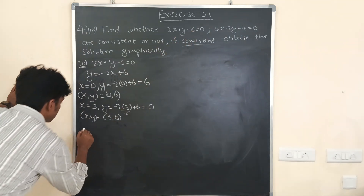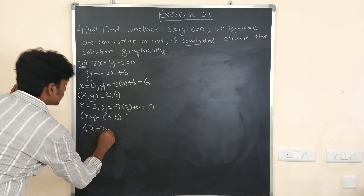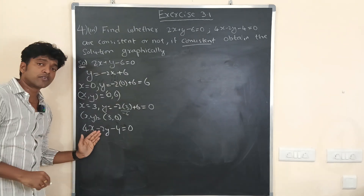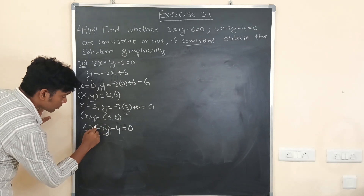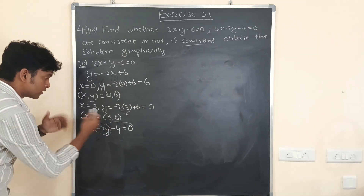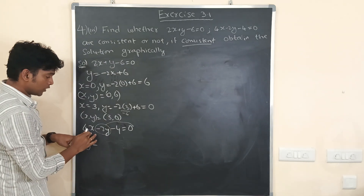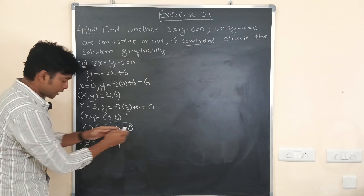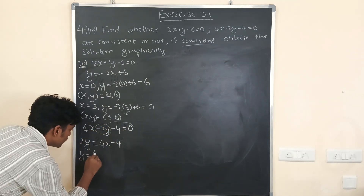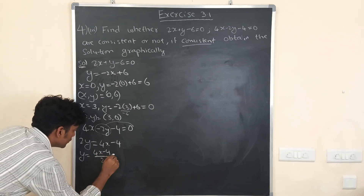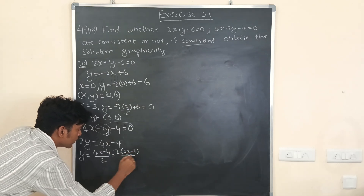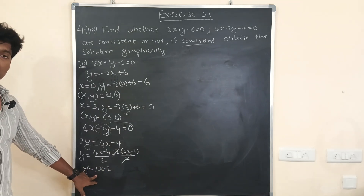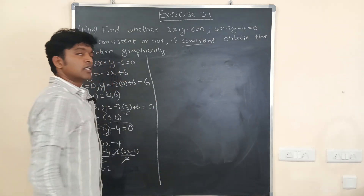The second equation is 4x - 2y - 4 = 0. We have to write this in terms of y. Taking minus 2y to the other side: 2y = 4x - 4. So y = (4x - 4) / 2. Taking 2 as common: y = 2(2x - 2) / 2, which gives y = 2x - 2. This is the equation in terms of y. We find values of y by substituting x values: if x = 0, y = 2(0) - 2 = -2.